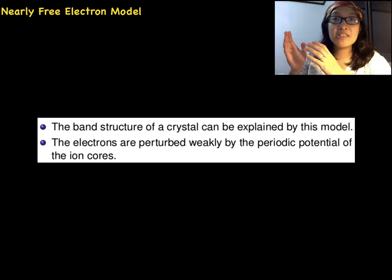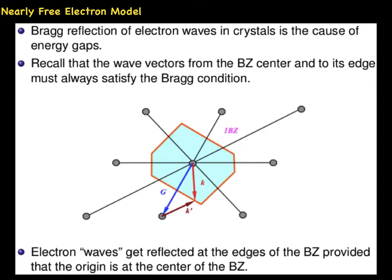The nearly free electron model explains the band structure of a crystal. It explains that electrons experience a weak perturbation due to the positive ion cores of the crystal. The origin of the gap can be based on electron wave diffraction at the Brillouin zone edges.